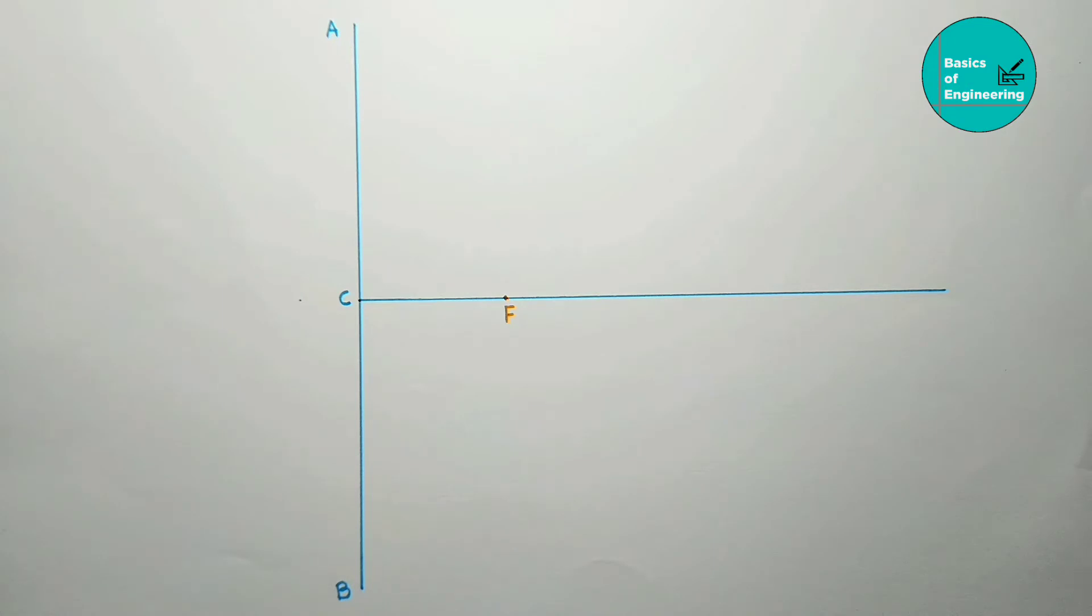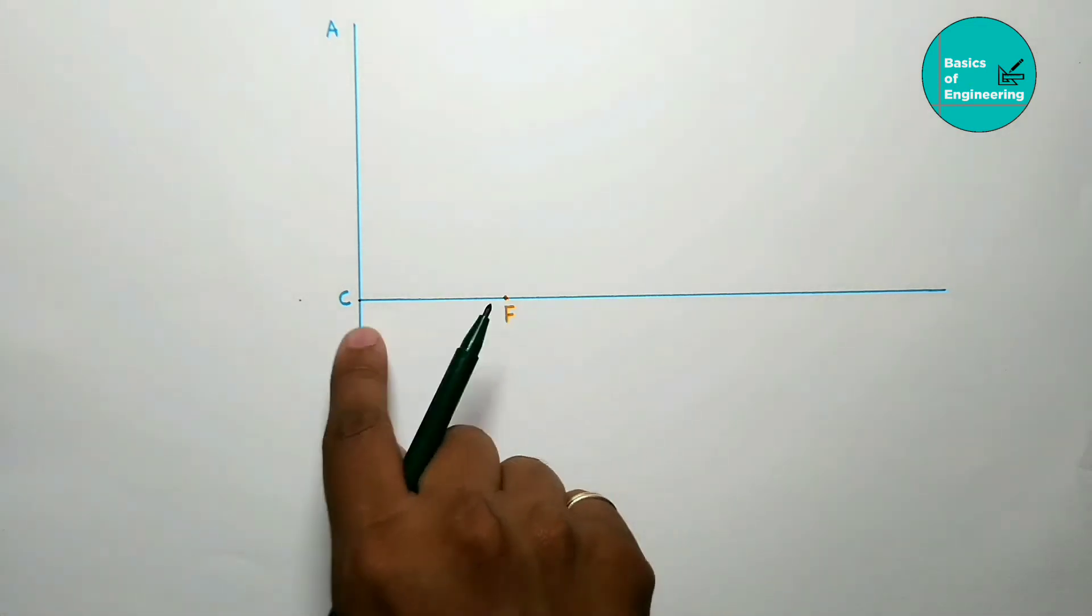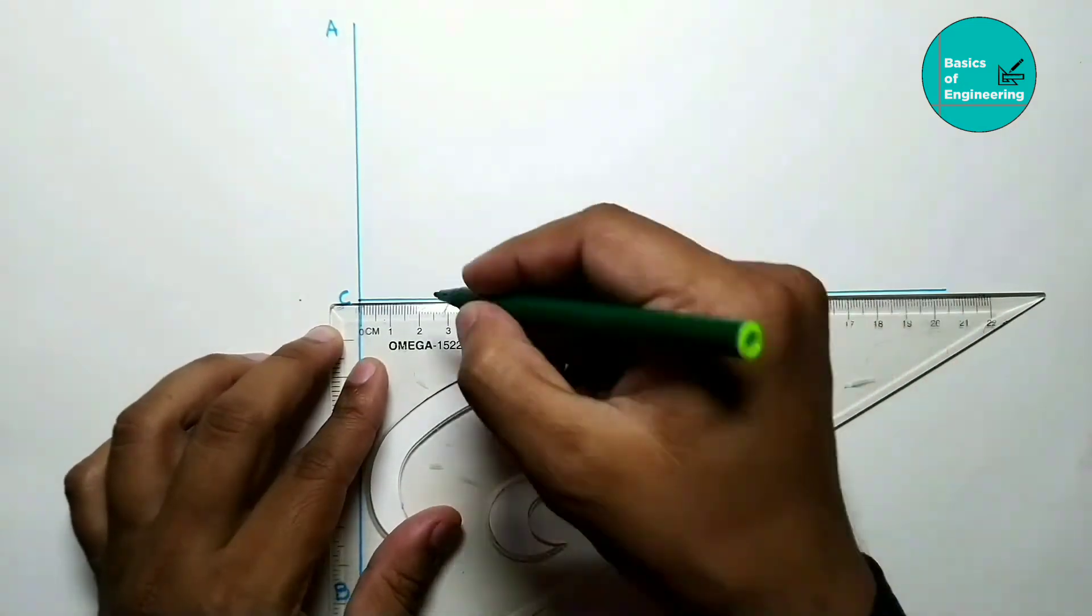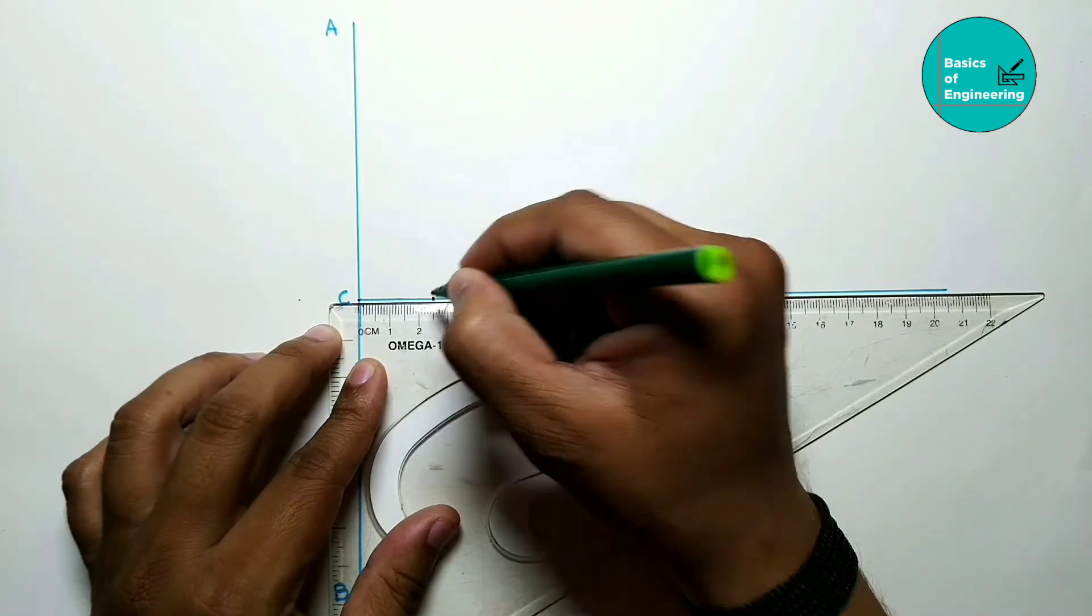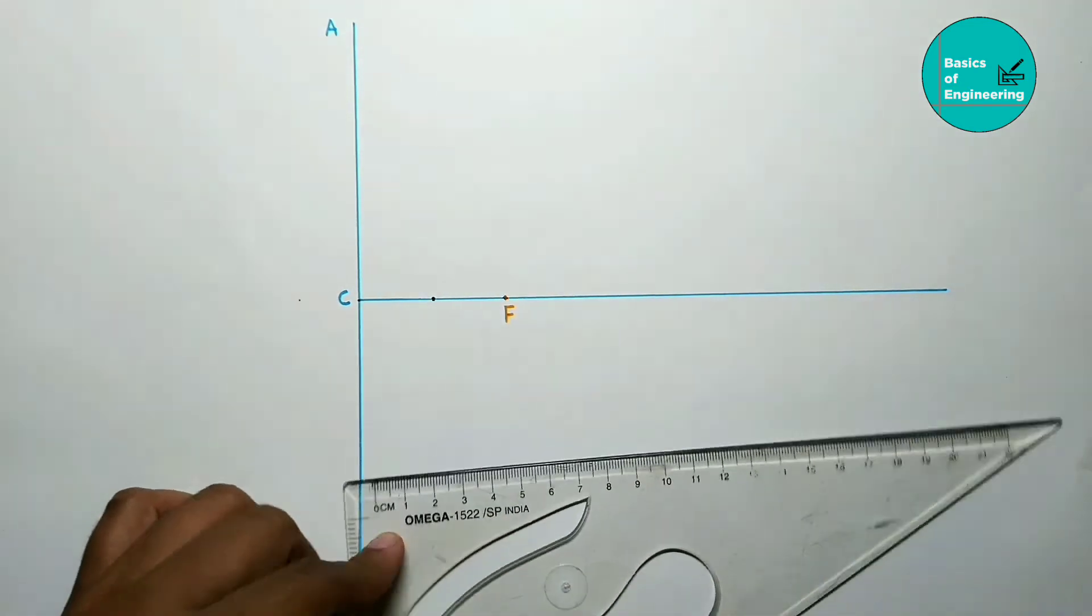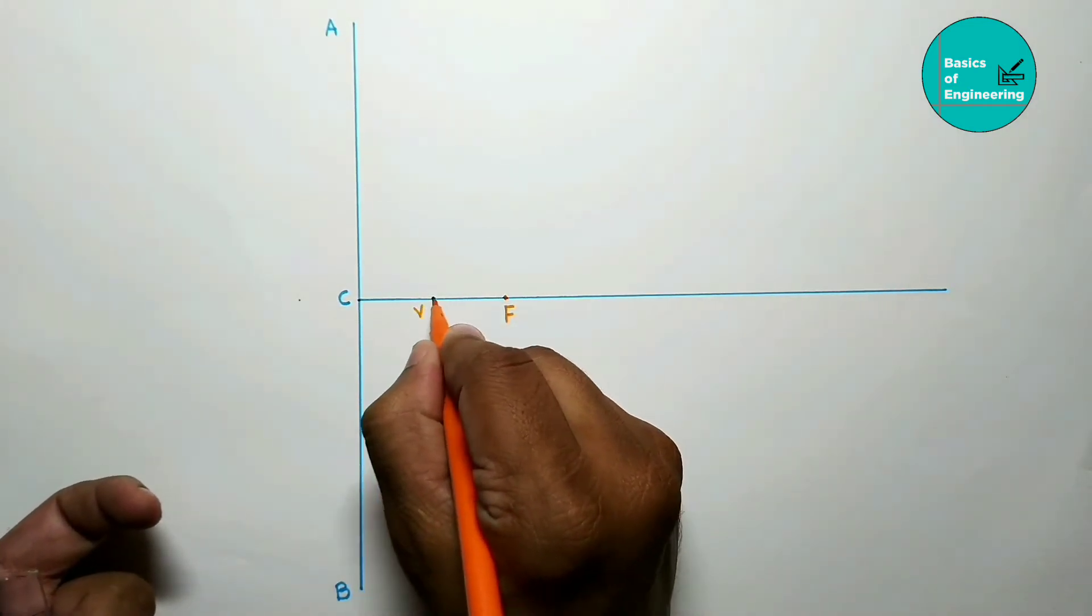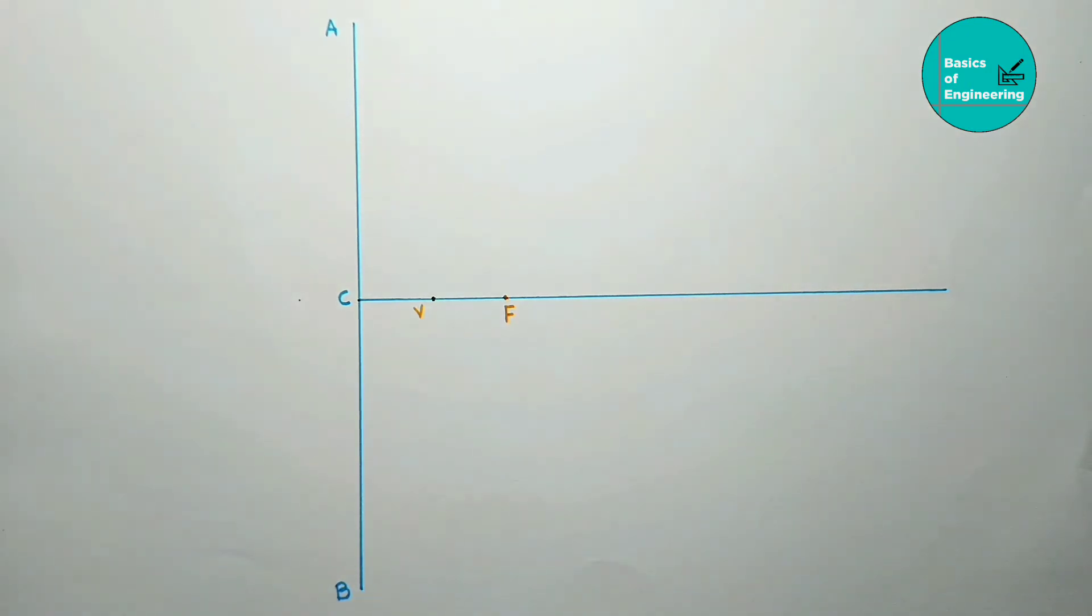Now plot the vertex point. For the parabola, eccentricity is equal to 1, so Vf upon Vc equals 1. So the vertex point is always at the center of these two points. Mark the vertex point at 25 mm.